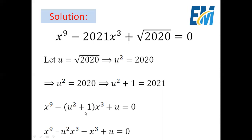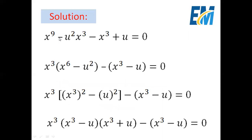We expand the two terms to get x to the power 9 minus u squared x cubed minus x cubed plus u equals 0. From the first two terms we take x cubed as a common factor, giving x cubed times (x to the power 6 minus u squared). Then from the last two terms we take the negative sign as a common factor, giving minus (x cubed minus u).